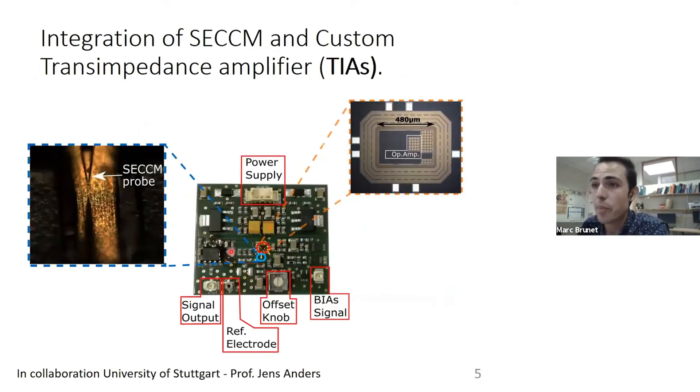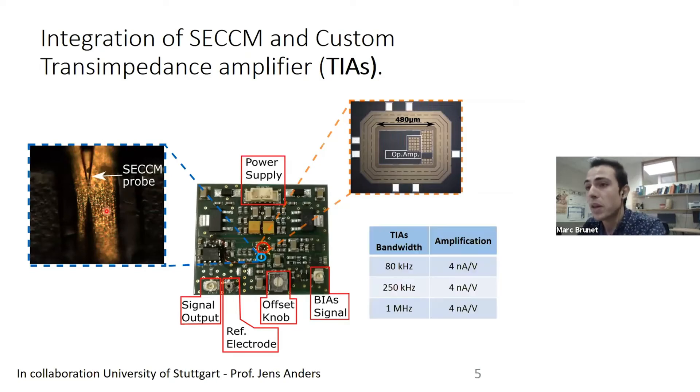Here is a picture of the PCB board that has been designed and fabricated by our collaborators at the University of Stuttgart. This PCB board has all the electronics needed to run the current amplifier. It has a current amplifier chip and also the gold electrode pad where we land our pipette and conduct our electrochemical measures. We have manufactured three of those current amplifiers with different bandwidths: 80 kilohertz, 250 kilohertz, and one megahertz, all having an amplification magnitude of 4 nanoamps per volt.